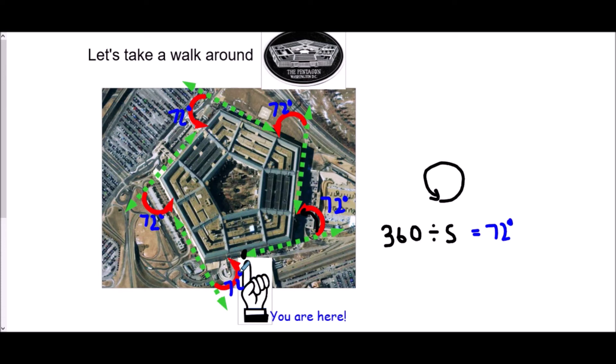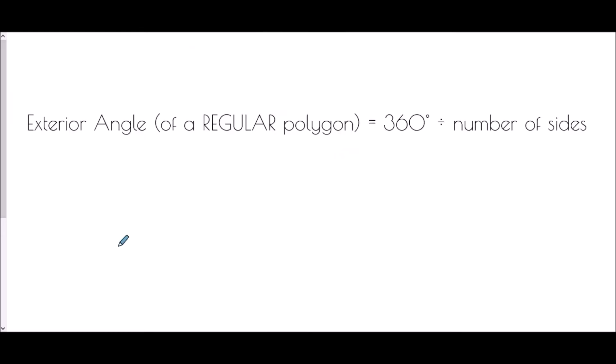So the general rule is: the exterior angle of a regular polygon is 360 degrees divided by the number of sides.